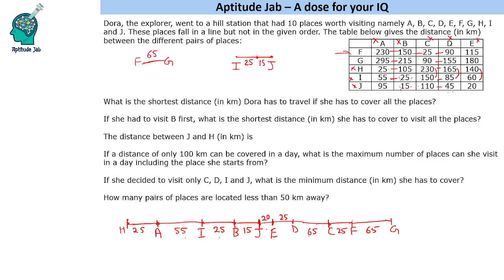I have written all the distances. The first question: what is the shortest distance Dora has to travel if she has to cover all the places? She will go from one end to the other. Adding up: 80 + 105 + 120 + 140 + 165 + 230, and 230 plus 90 is 320. So the answer is 320.